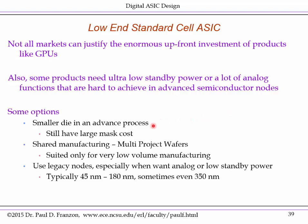Of course, you can use smaller die in an advanced process — you still support the mask cost, but it is a viable option, particularly for largely digital parts. If you're in low-volume production, you can share the mask cost with others. These are called multi-project wafers, and a number of organizations and fabs run them to allow smaller companies to do small-volume, relatively cost-effective digital production in advanced nodes.